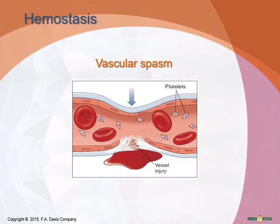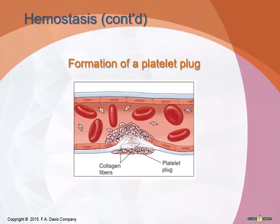Along the inside of your blood vessels is a layer of smooth muscle, which allows them to constrict and dilate. If a blood vessel is injured, this smooth muscle performs the first step of hemostasis — it spasms, which constricts blood flow to the wounded area.